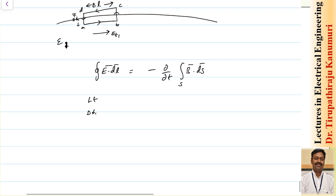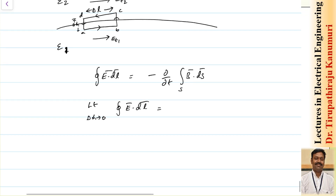Taking the limit as delta h tends to 0, the line integral of E dot dl becomes: as delta h tends to 0, the sides bc and ad will become 0, so the only remaining components are along ab and cd.